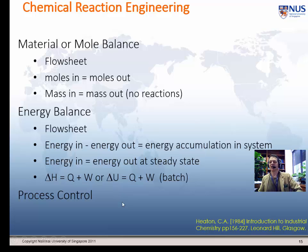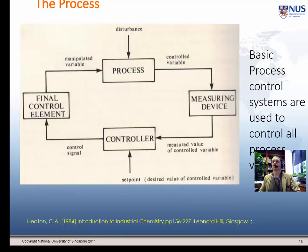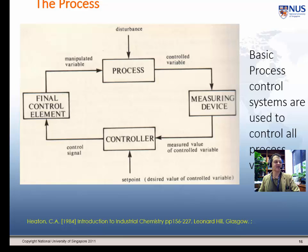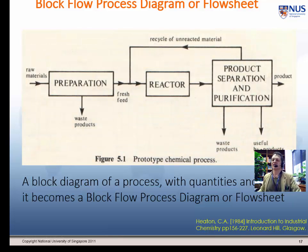Process control — it goes without saying that you have things in your plant to control each of your process variables, rather like the thermostat in your gas oven. It goes almost without saying that you have process control where you need it for the variables you need in your plant. So, a flow sheet — what is it? This is an exemplar flow sheet.